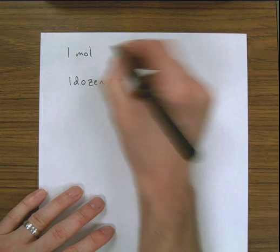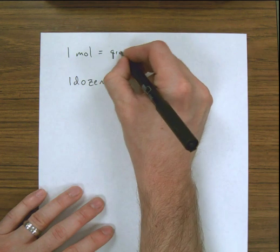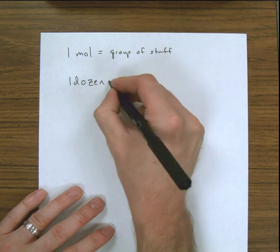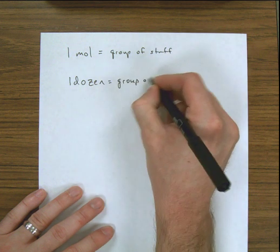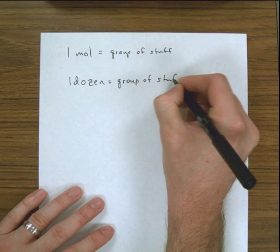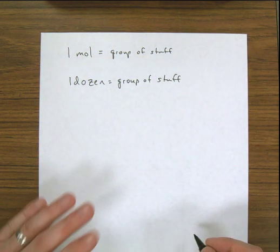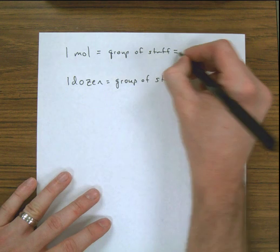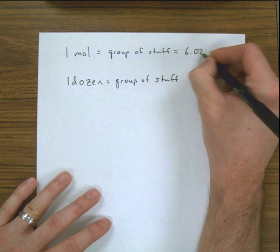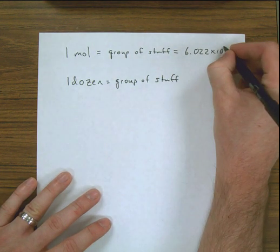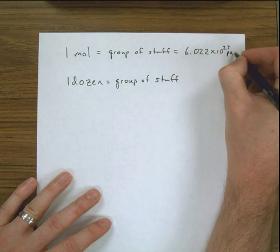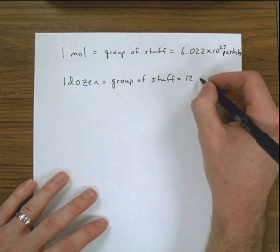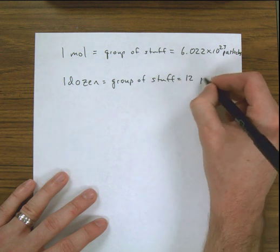It's just a group of stuff. The amount that each of these groups of things are is different, but they're still just a way to count groups of stuff. We have a fancy name for what that stuff is called — we call it particles. And you could apply that to the concept of a donut as well, where there are 12 particles in it.